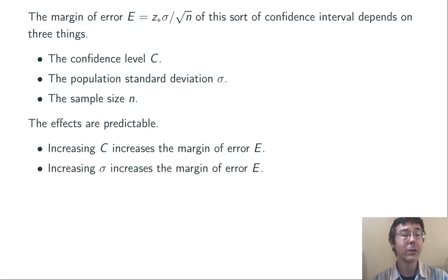Secondly, if we increase σ, we're going to increase the margin of error E. If there's more spread in the data, our sample mean is going to be a less reliable predictor of the population mean.